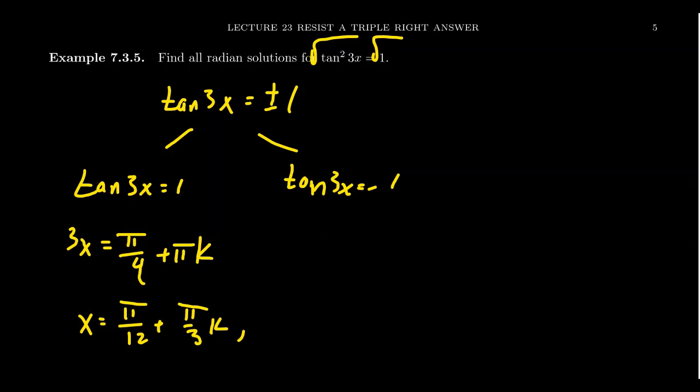What about the second one? When is tangent equal to negative 1? That happens, of course, in the second and fourth quadrant. 3x here, you're going to get 3 pi fourths plus pi k, like so.